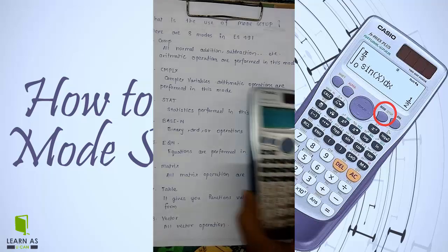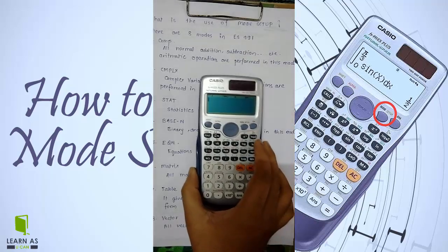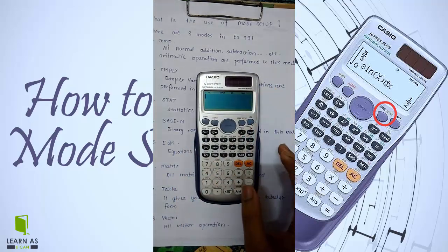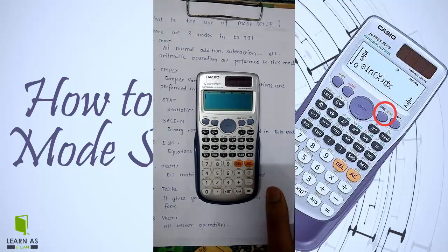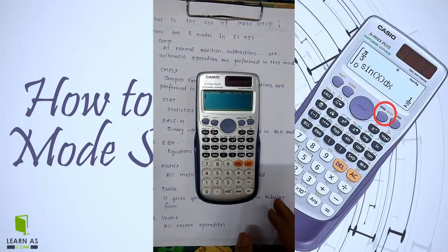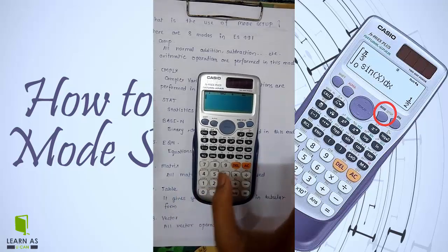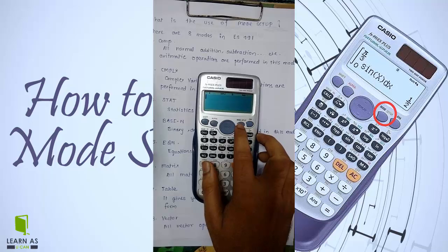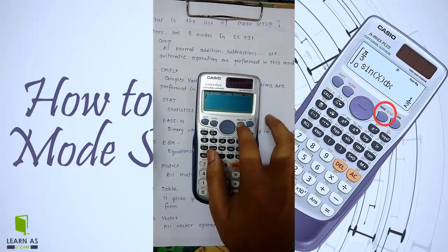So how to work on this calculator — I am showing you that. First, you have to select the mode. So how to select: press Mode Setup. You can see eight options are there.